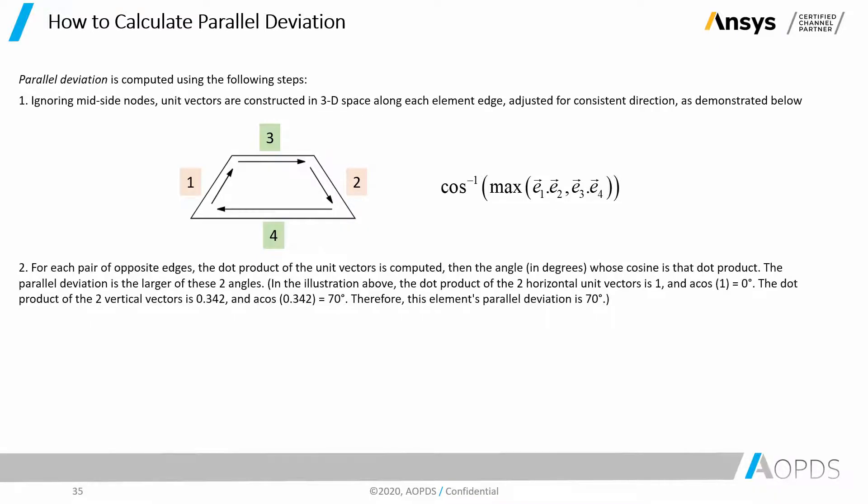Number two: for each pair of opposite edges, the dot product of the unit vectors is computed. Then the angle in degrees, whose cosine is that dot product. The parallel deviation is the larger of these two angles. In the illustration above, the dot product of the two horizontal unit vectors is 1,